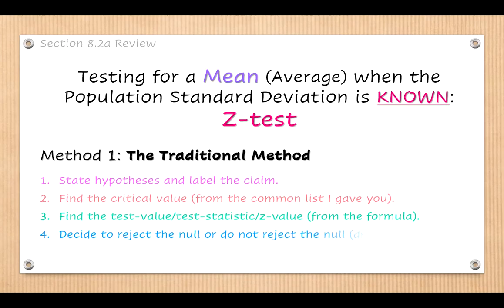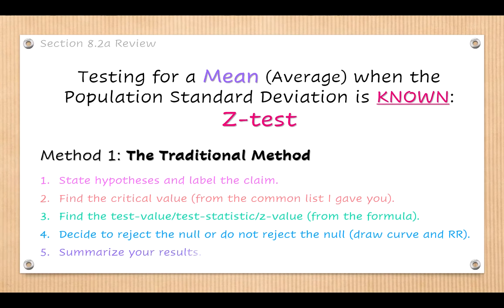Step four: draw your normal distribution curve, label your critical value and rejection region, and look at whether or not the z-value falls in the rejection region. If it does, you reject the null. If it doesn't, you don't reject the null. Step five: make your summary statement or conclusion about your results — that always comes from that table with the four possible answers about whether you found enough evidence to support or reject the claim.